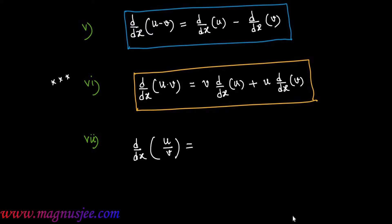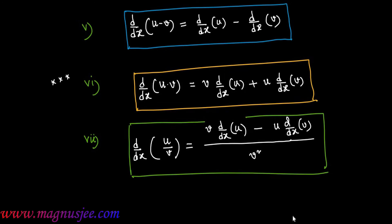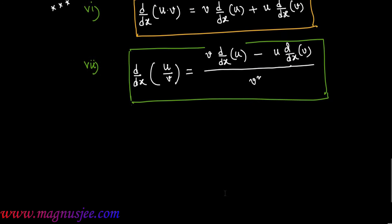Formula number 7: d/dx of (u/v) — the quotient rule — equals v·(d/dx of u) minus u·(d/dx of v), all divided by v squared. That means it is divided by the square of the second variable, and we get d/dx(u/v) = [v·d/dx(u) − u·d/dx(v)] / v².